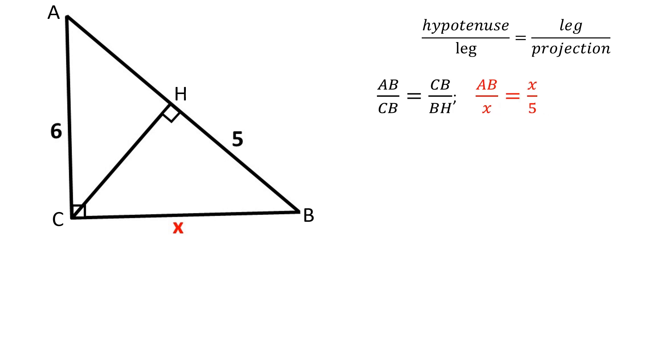Let's sub in the values. x squared is equal to 5AB. Now let's use the Pythagorean theorem for the triangle ABC.